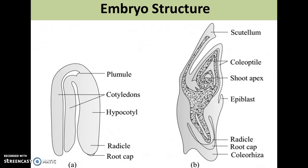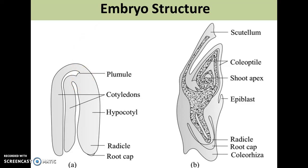The embryo has several parts and grows from two points: the radicle and the plumule. When the radicle begins to grow, it orients toward gravity and grows downwards, developing into roots, while the plumule grows upward and becomes the shoot. Attached to the shoot are the cotyledons or seed leaves. The area of the embryonic axis above the cotyledon is the epicotyl — when exposed to sunlight it sprouts leaves for photosynthesis — and the area below the cotyledon is the hypocotyl. Diagram A represents the embryo of a dicot plant and diagram B represents the embryo of a monocot plant, which has only one cotyledon.